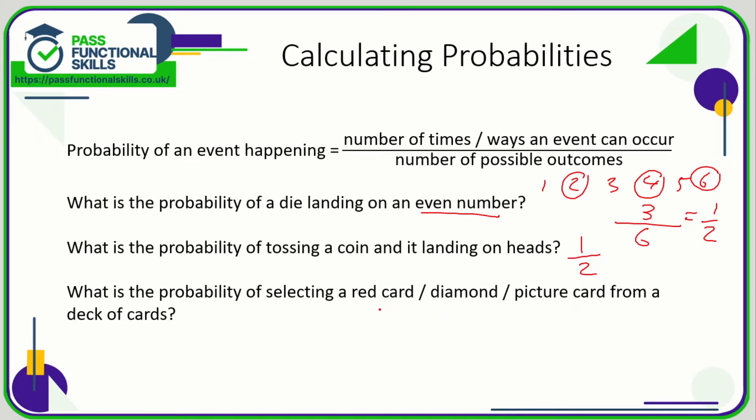What's the probability of selecting a red card in a pack of cards? Well, the cards are either red or black, so that's one out of the total two colors. In a pack of cards there are four suits: diamonds, hearts, spades, and clubs. So out of the four suits, how many of them are diamonds? Just the one. So that is one quarter.